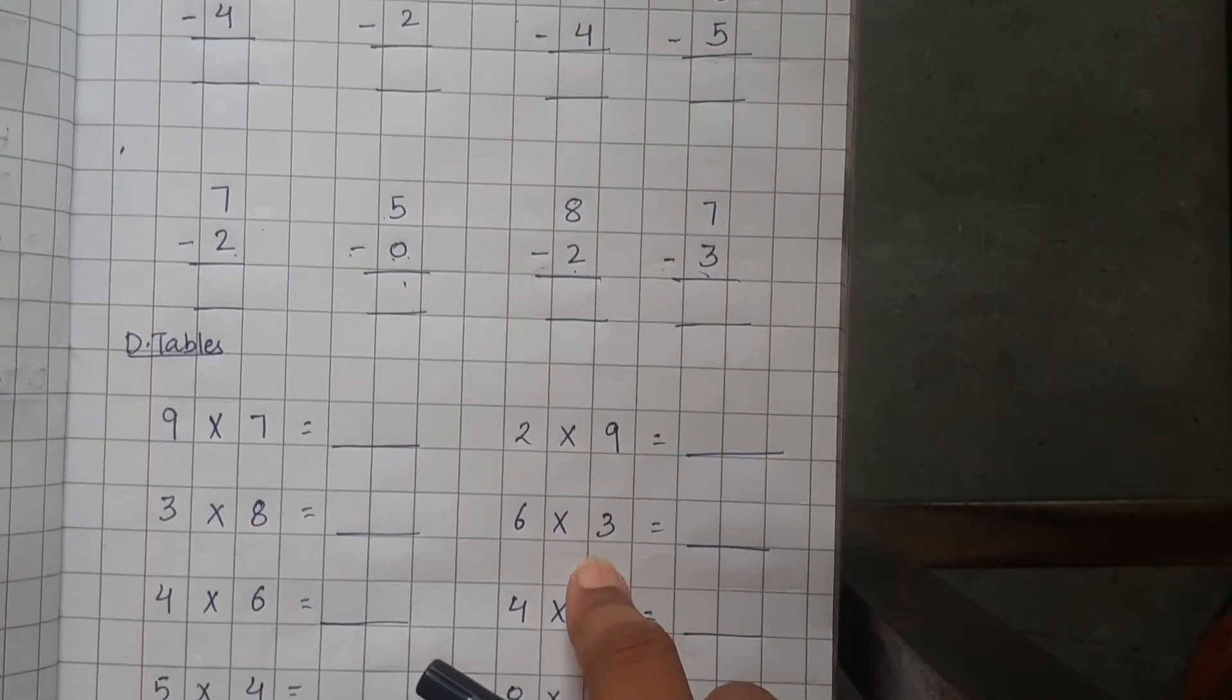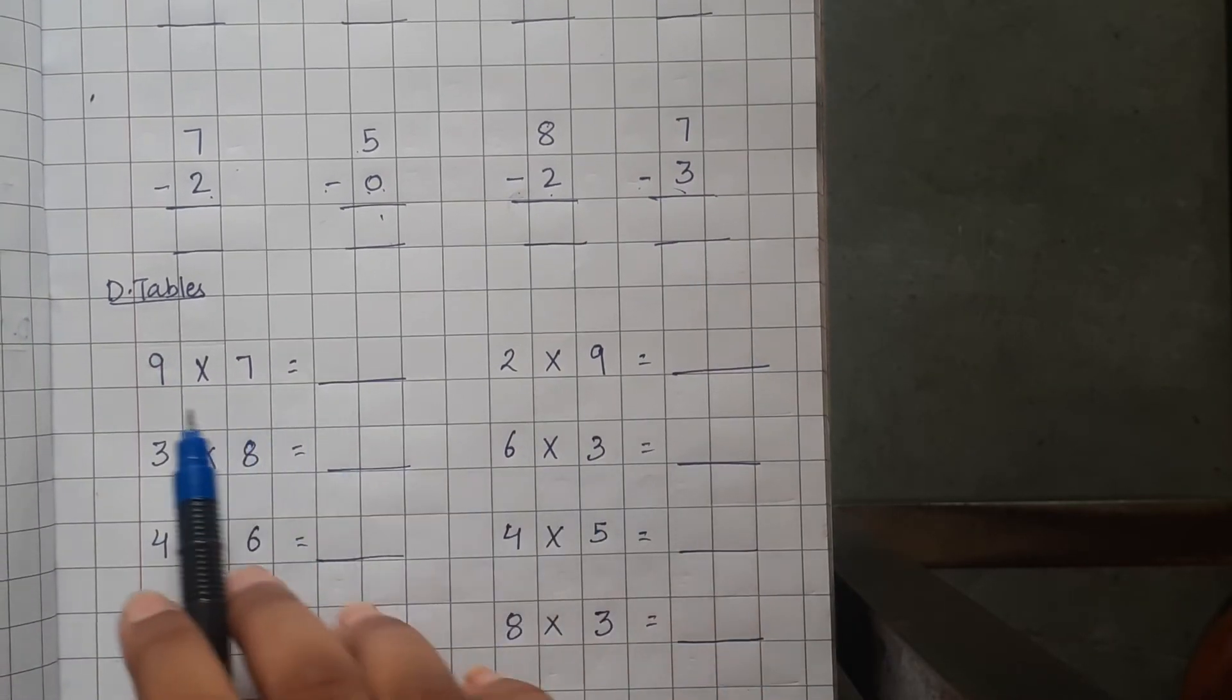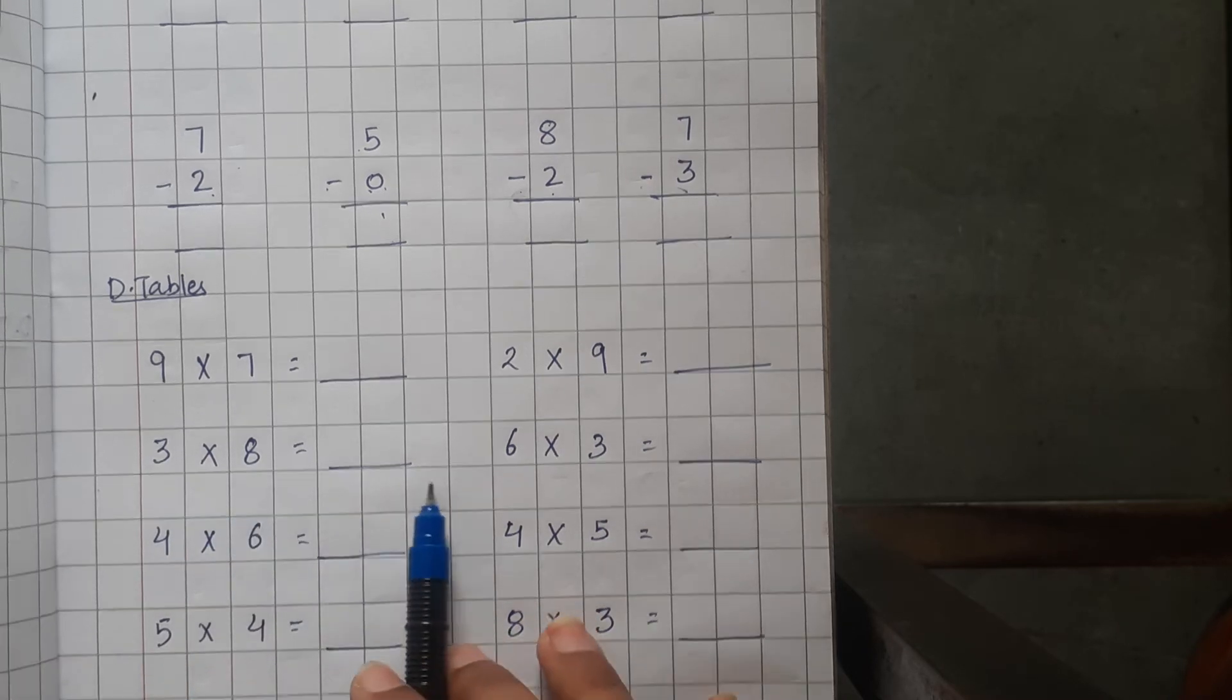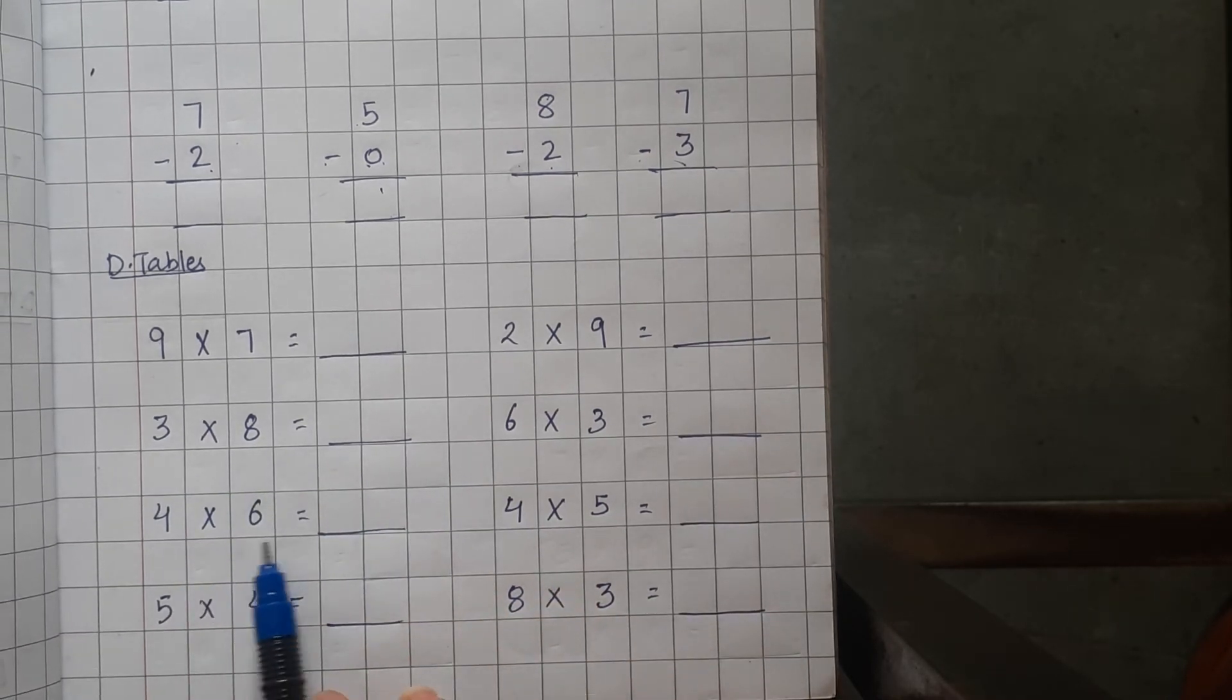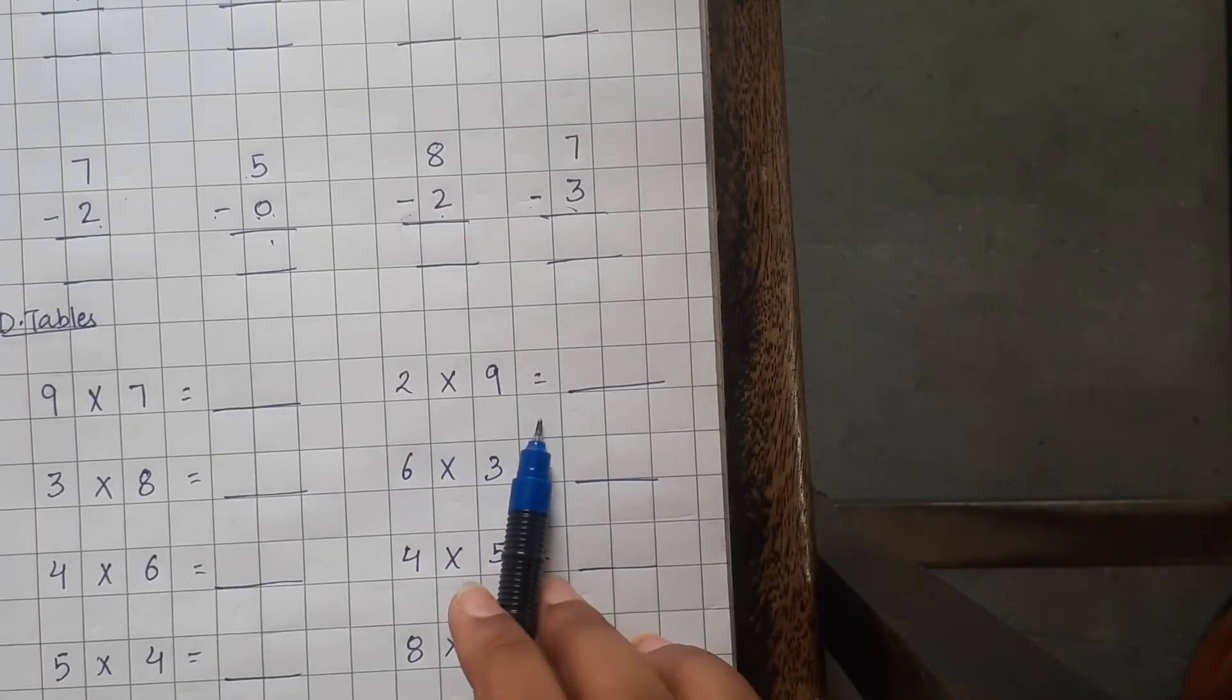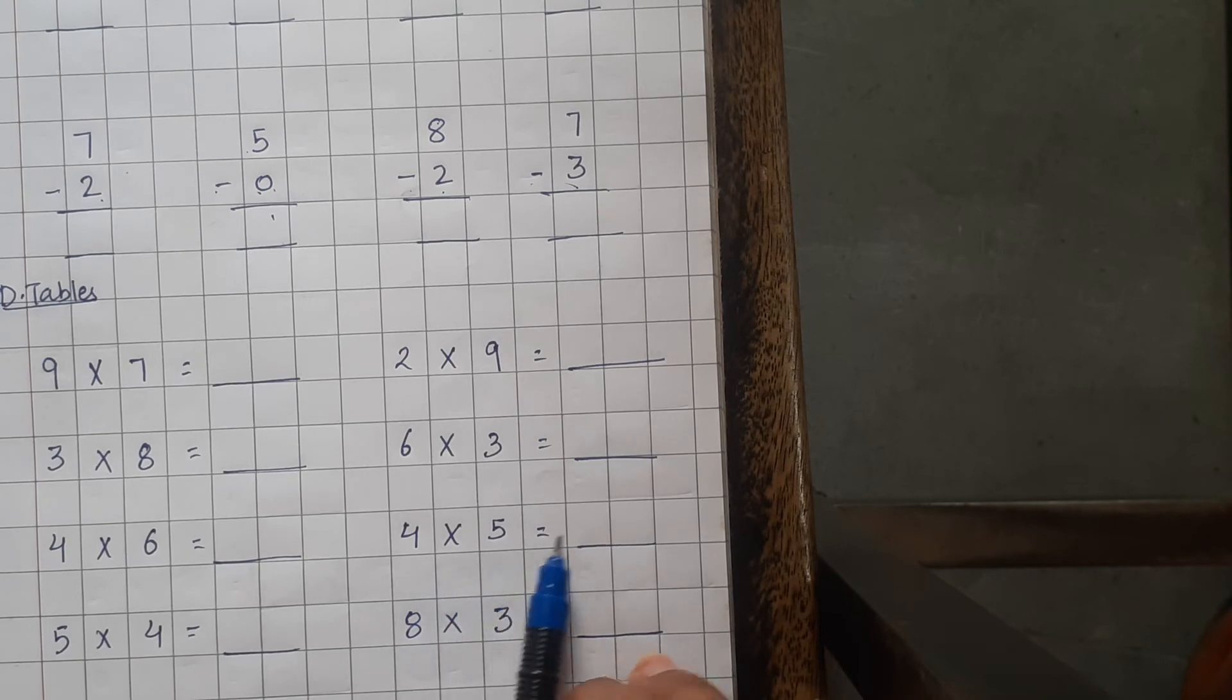Now, students, you have to note down these D tables and answer them. What is 9, 7's are? 3, 8's are dash, 4, 6's are dash, 5, 4's are dash, 2, 9's are, 6, 3's are, and 4, 5's are, and 8, 3's are.